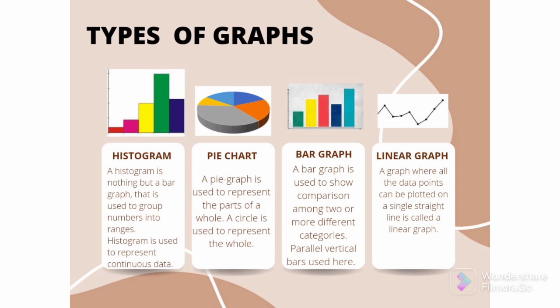Bar graph: a bar graph is used to show the comparison among two or more different categories. The parallel vertical bars are used here. Linear graph: a graph where all the data points can be plotted on a single straight line is called a linear graph. Any type of information or collected data can be expressed in any of these graphs.